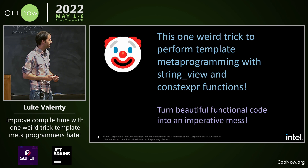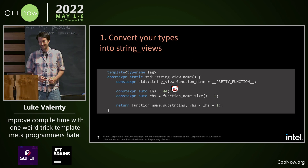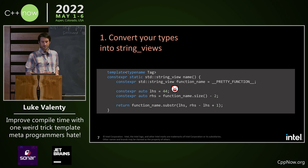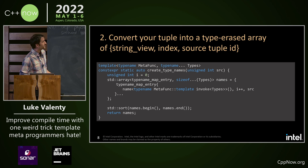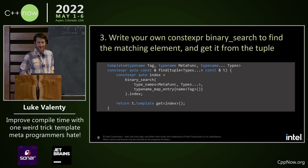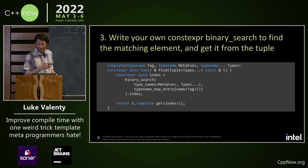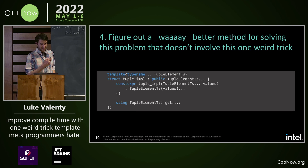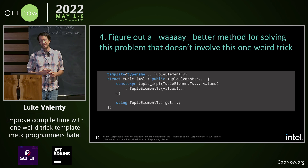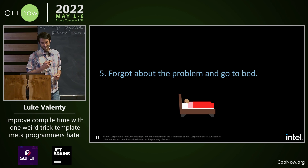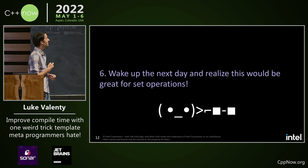Turn beautiful functional code into an imperative mess. Step one: convert your type names into string views. Step two: convert your tuple into a type-erased array of string view index and source tuple ID. Step three: write your own constexpr binary search to find the matching element and get it from the tuple. Step four: figure out a way better method for solving this problem that doesn't involve this one weird trick. Step five: forget about the problem and go to bed.